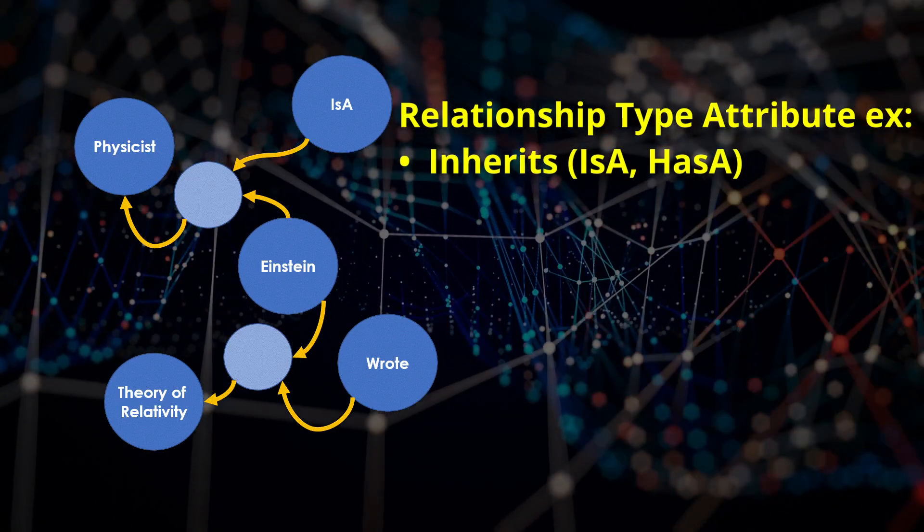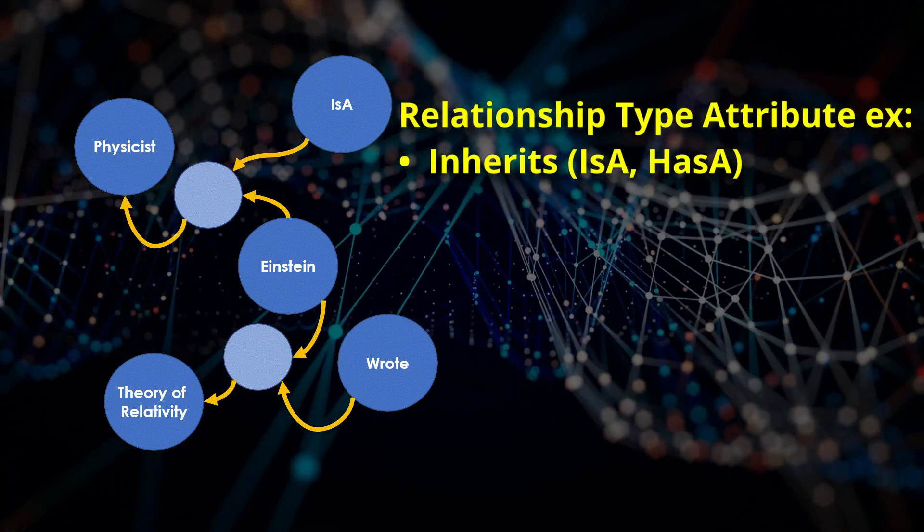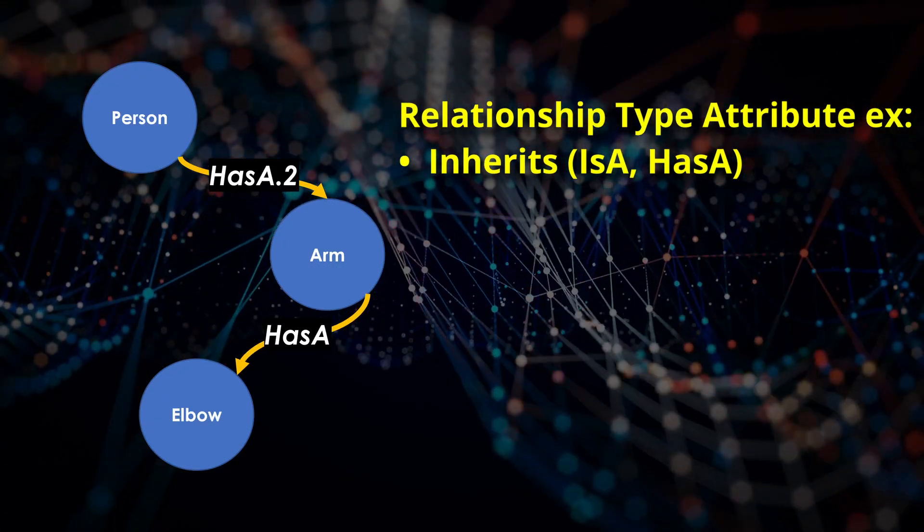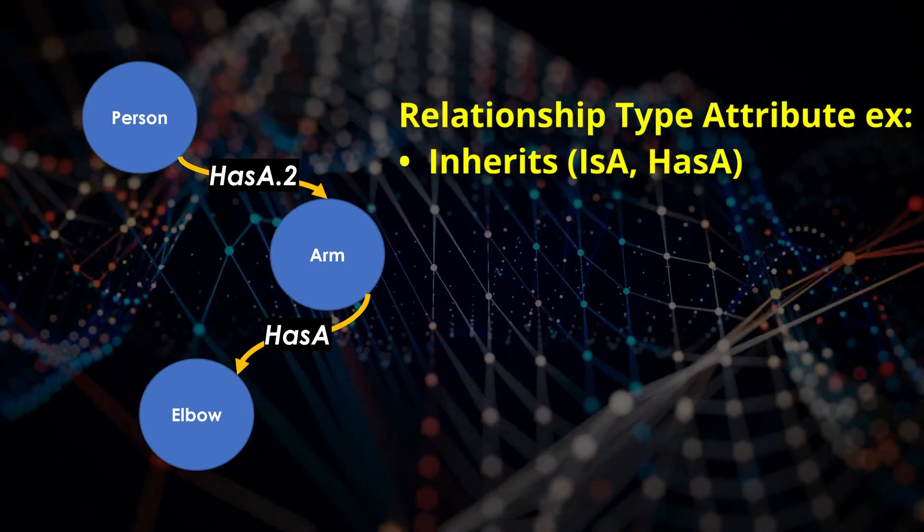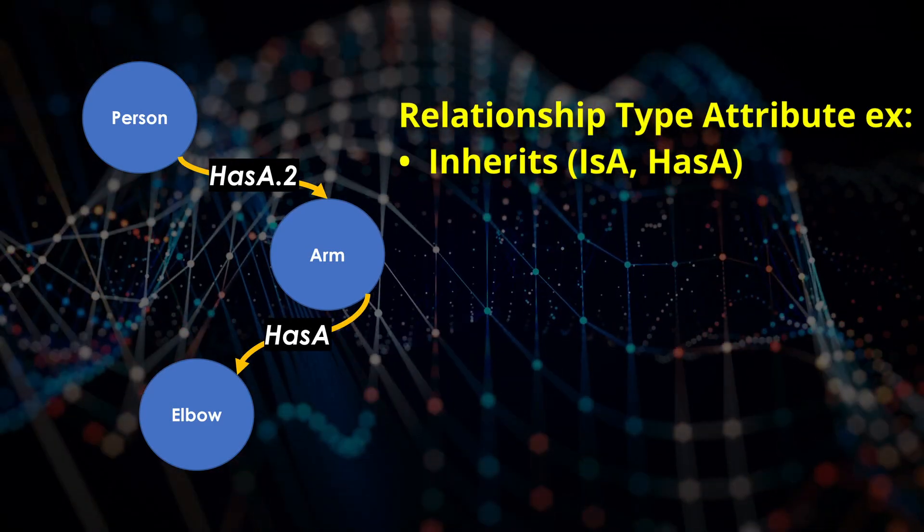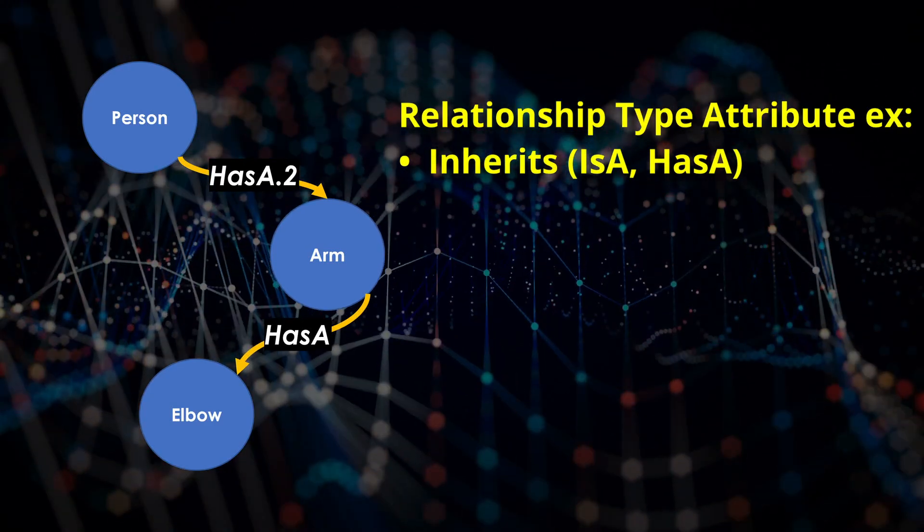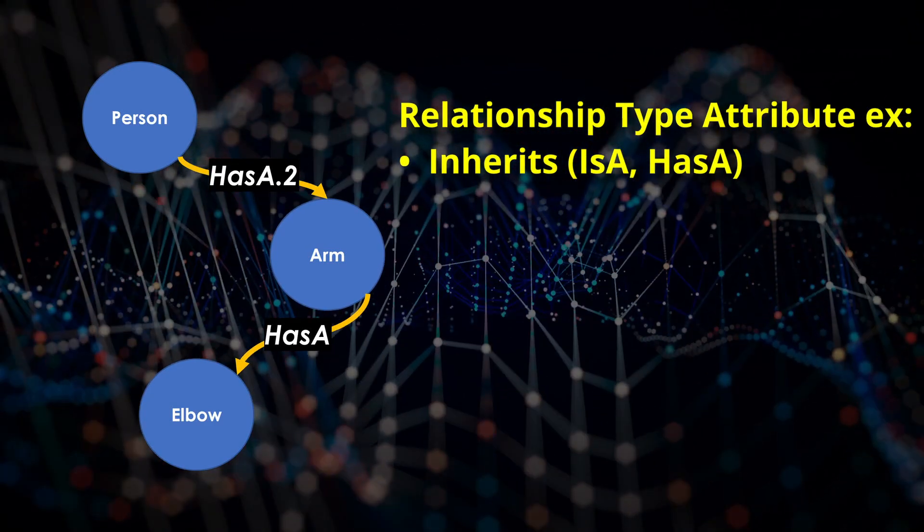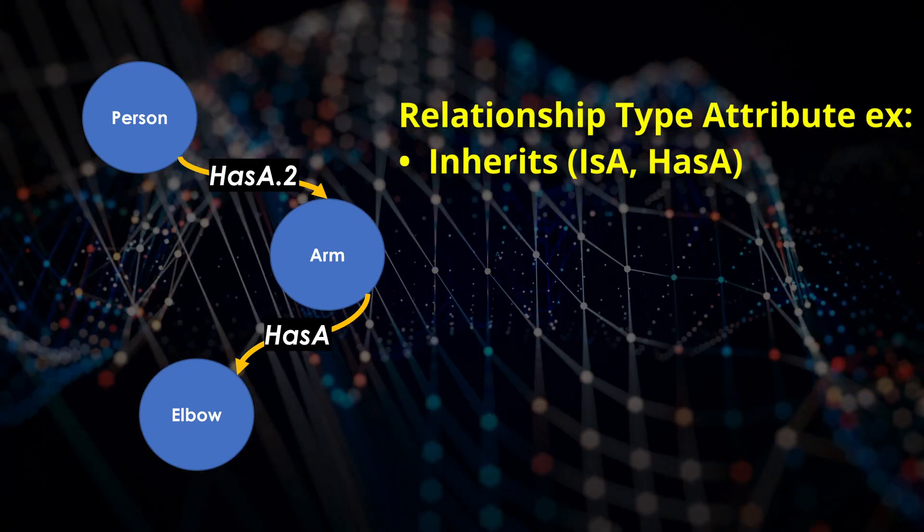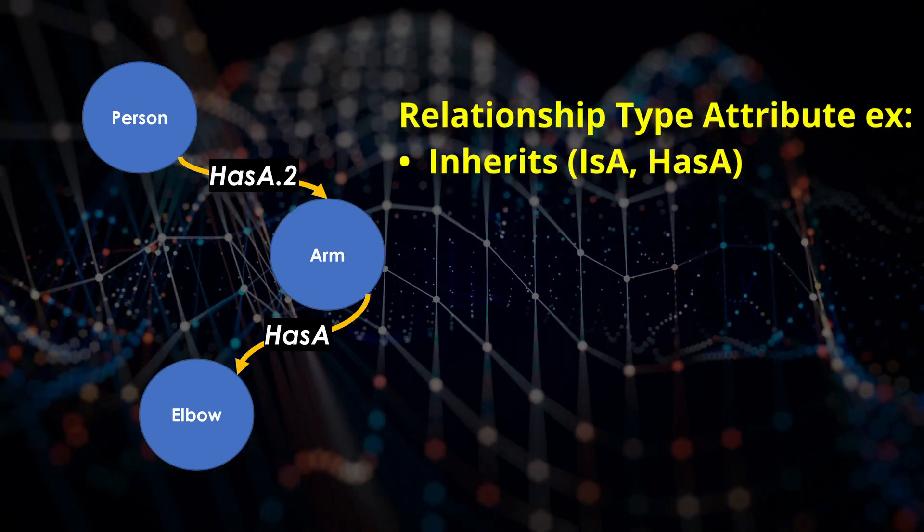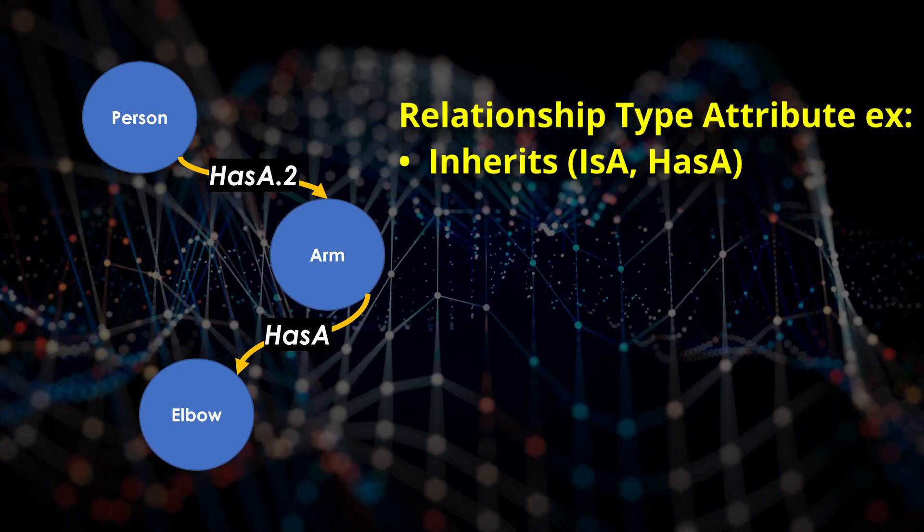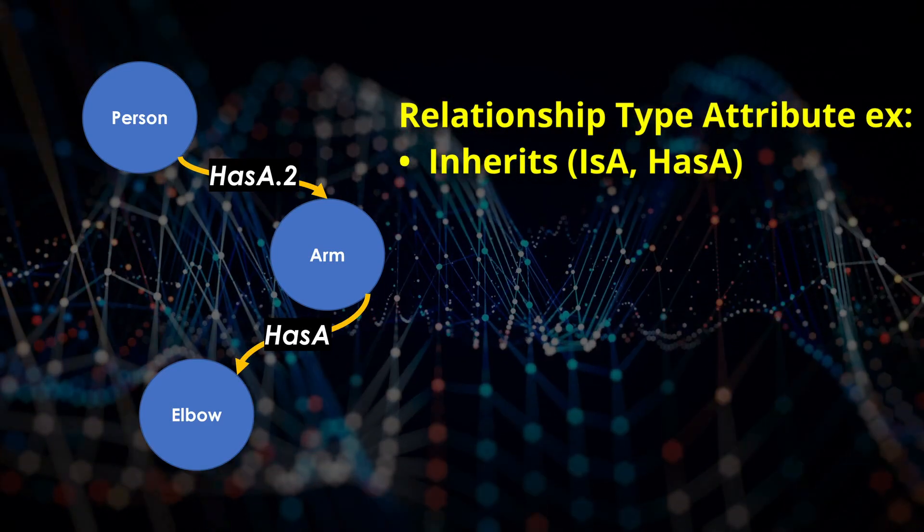Is-a and has-a relationships allow inheritance. For example, a person has two arms. An arm has an elbow. Therefore, a person has two elbows. Exceptions make this a powerful data compression technique. An individual node only needs information which makes it unique. Most information is inherited.